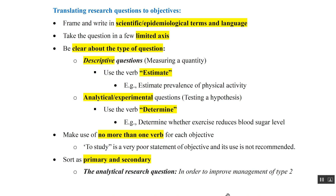For example, 'estimate the prevalence of physical activity' is a descriptive objective, and 'to determine whether exercise reduces blood sugar level' is an analytical objective. Never use more than one verb for each objective. Sometimes people use 'to study' very frequently, but this is a very poor statement of an objective — the verb 'to study' should not be used and is not recommended.